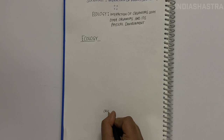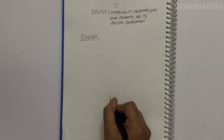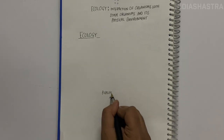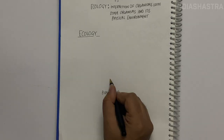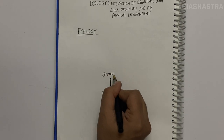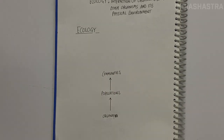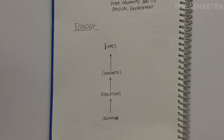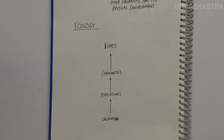Ecology is basically concerned with four levels of biological organization: first, organisms; second, populations; third, communities; and lastly, biomes. In this chapter, we explore ecology at the organismic and population level.